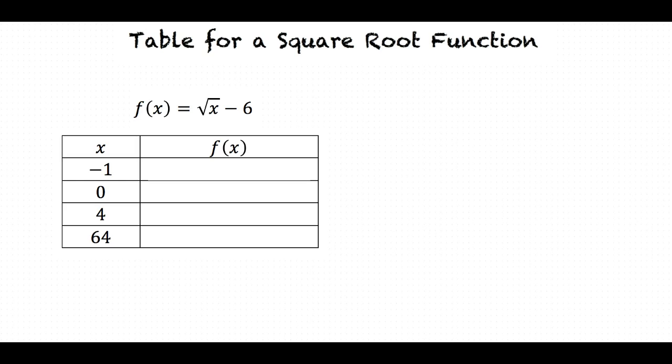Let's start from the top and solve for f(-1). f(-1) is equal to the square root of negative 1 minus 6. However, this isn't a real number since we cannot take the square root of a negative number. Therefore, in the table, we will write that f(-1) is not a real number.